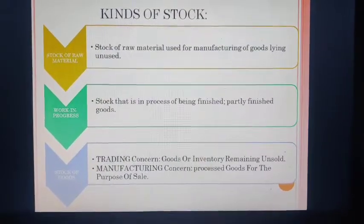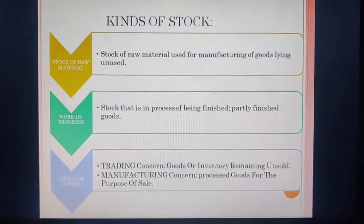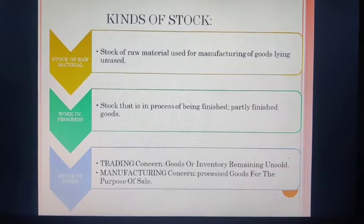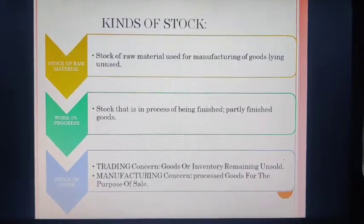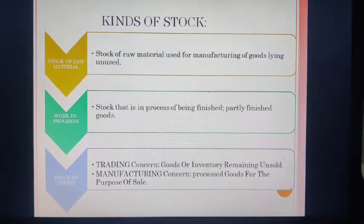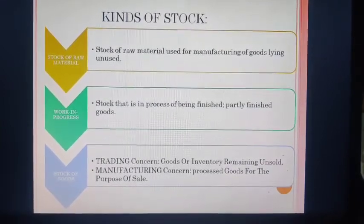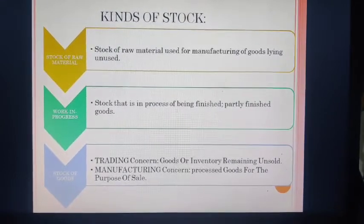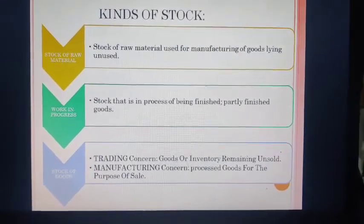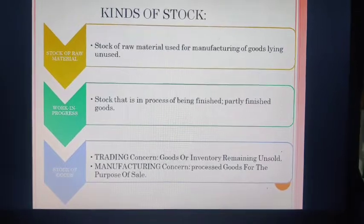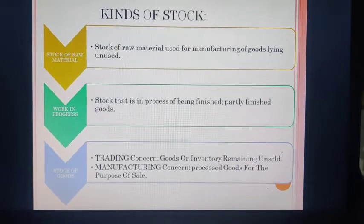Now, kinds of stock. There are two types of stock. First, stock of raw material — whenever raw material is purchased, goods are initially in raw material form. Any stock of raw material used for manufacturing of goods that is lying unused is stock of raw material. Similarly, there is work in progress — stock that is in the process of being finished, i.e., partly finished goods.